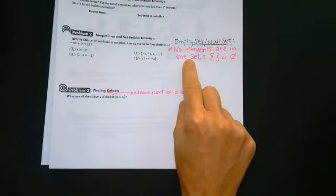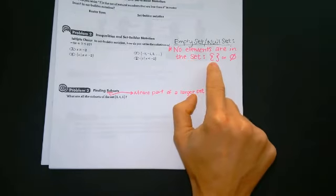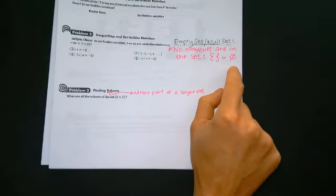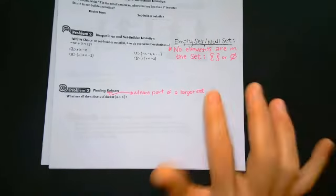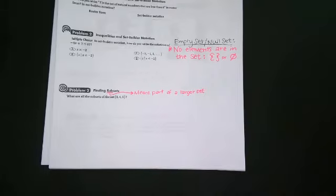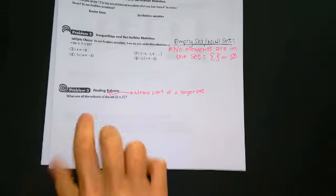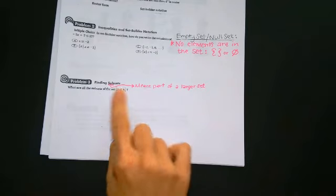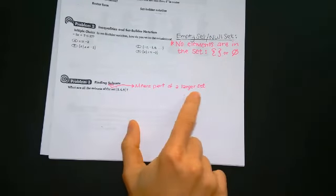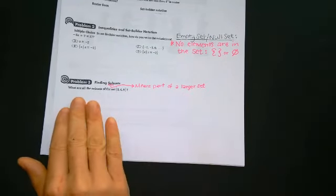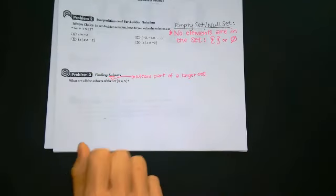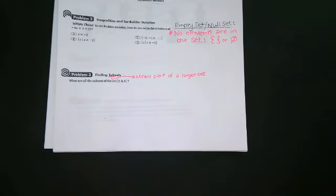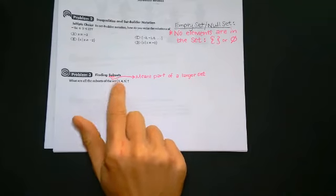All that means is there are no elements in this set, and you would write it with empty brackets or the no solution symbol. So sometimes you'll get something where nothing works, and we're going to call that the empty or the null set. We're going to start with problem 3 today, and that is finding subsets. Finding what a subset means is that it's part of a larger set. So here, this is actually quite a bit easier than the first part. It says, what are all the subsets of the set 3, 4, 5?